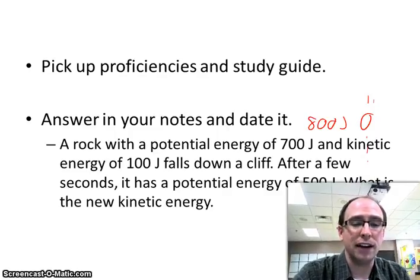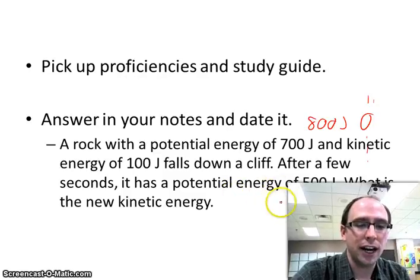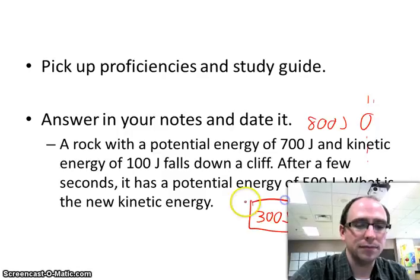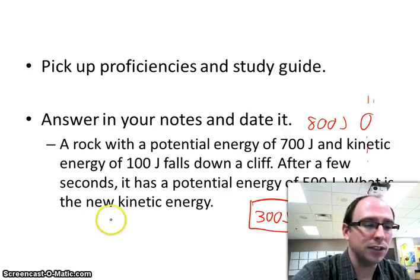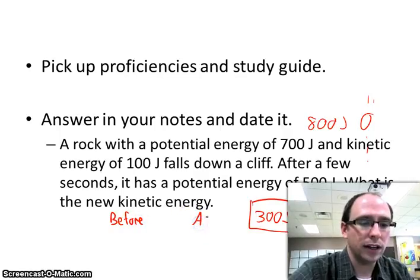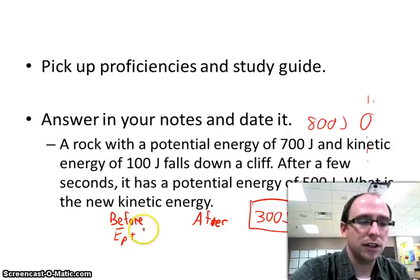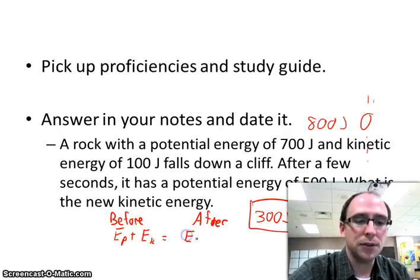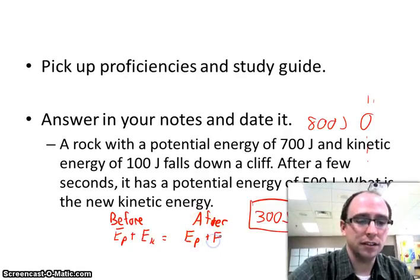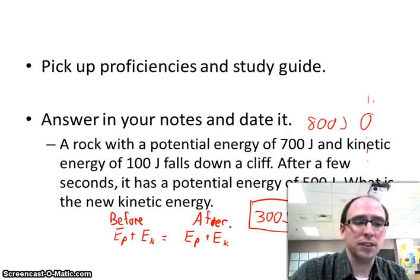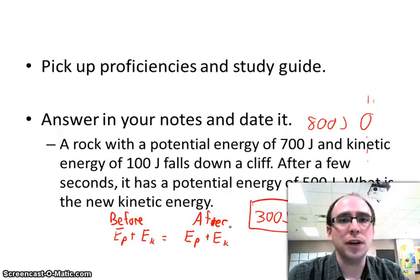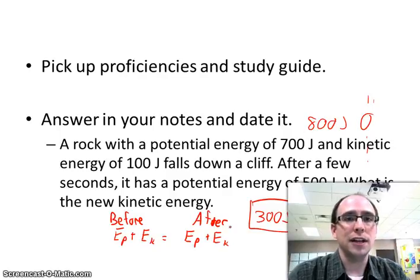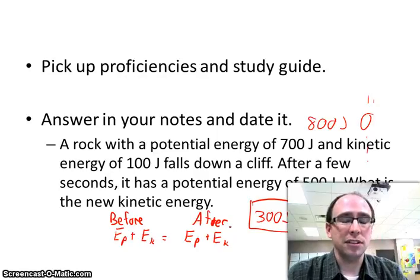So if you already know that it had 500 joules of potential energy, then it should have 300 joules of kinetic energy. It's really coming back to that whole thing — total energy, it stays the same. We think of it this way: the rock before had a total energy coming from its potential energy and kinetic energy, and afterwards it has to have the same amount of energy. Potential and kinetic before has to equal the potential and kinetic after. We solve problems that way, and there's going to be cases where you might not know the exact amount of energy, but you should be able to figure it out.